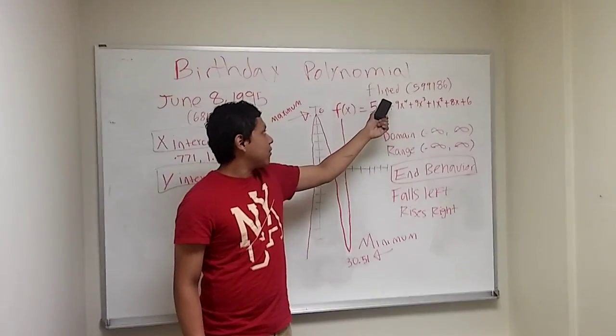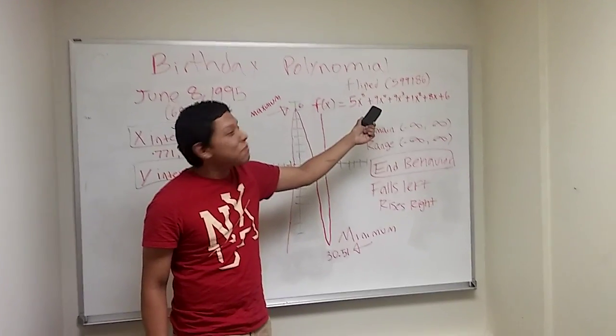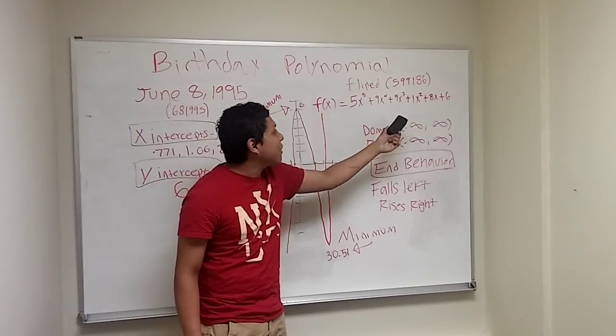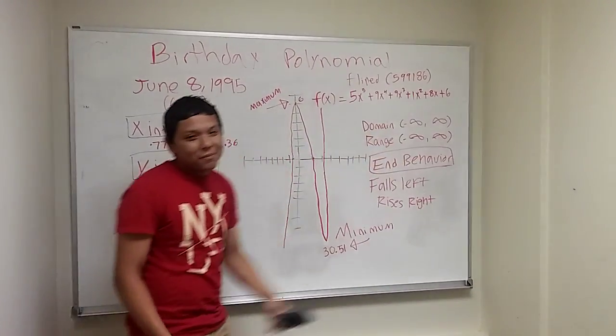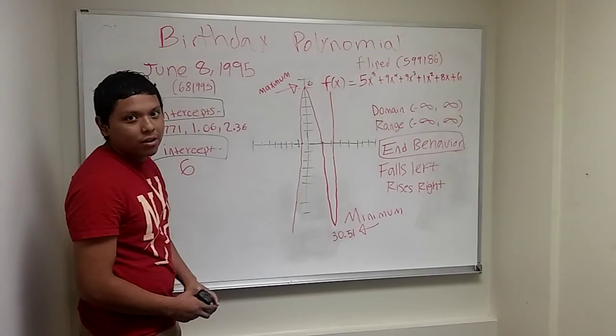So my equation is 5x to the 5th power plus 9x to the 4th power plus 9x to the 3rd power plus x squared plus 8x plus 6. That's the equation I'm going to be using.